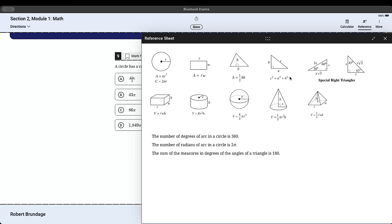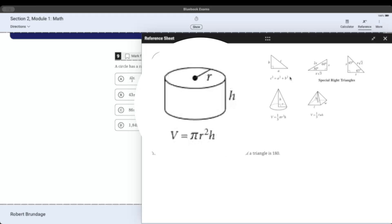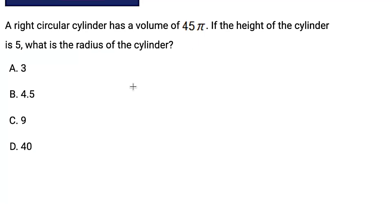So it looks like volume is pi r squared times height, which makes sense, right? Because you've got a circle which is pi r squared, and then you're just adding height to that circle to make a circular cylinder. So first thing I would do is literally just write down the formula. Volume equals pi r squared times height, and then plug in what we know. It has a volume of 45 pi, so we're going to change v to 45 pi. The height of the cylinder is 5, so we're going to change h to 5. What is the radius of the cylinder? So all we have to do is solve for r. Let's do it.